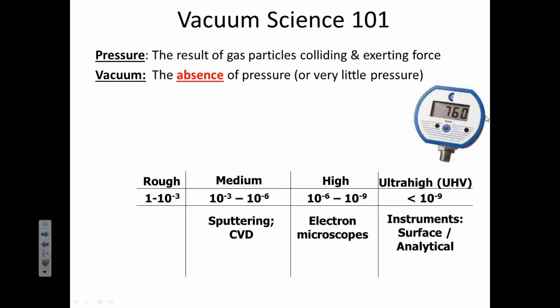And a vacuum is the opposite of something having pressure. It's the absence of pressure, or there's very, very little pressure. Atmospheric pressure is measured at about 760 torr, also known as 1 ATM, 101.3 kPa, 760 mmHg. There are lots of different units for pressure.